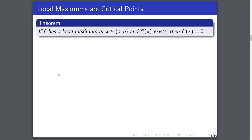One of the first theorems we can prove — and is probably a result you remember from calculus — is that local maximums are indeed critical points. The rigorous statement is that if f has a local maximum at x and f prime of x exists, then the derivative will be zero there.